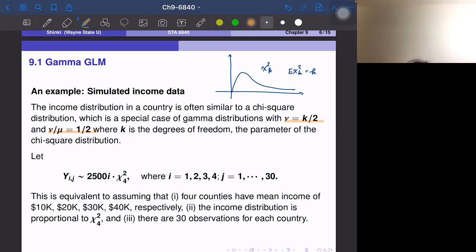So we generate the random variables in that way. So Y_ij, i is country and j is the j-th observation within the country. We define this as the random variable, 2,500 times i times chi-square four. So chi-square four has mean four. Expectation is four. So the expectation of this is four. So if i equals one, then expectation of Y_ij is equal to 10,000. If i equals two, then expectation is 20,000. And three and four, 30 and 40,000.